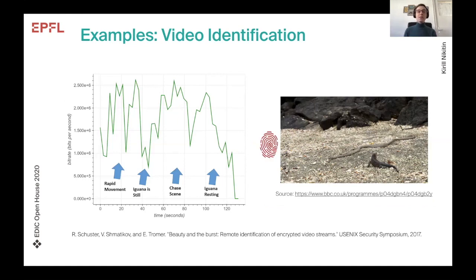In this particular example, Schuster et al. demonstrated how to identify videos being streamed. The key insight is that bitrate depends on how much action happens in the video — more action, more bits being sent — and this information was sufficient to uniquely identify a large corpus of videos.